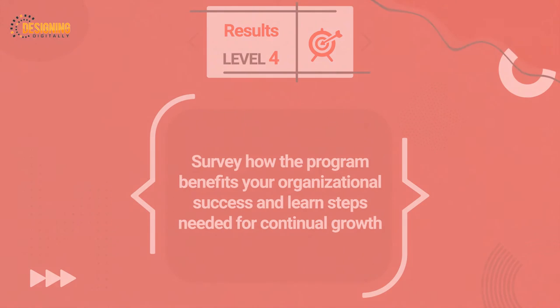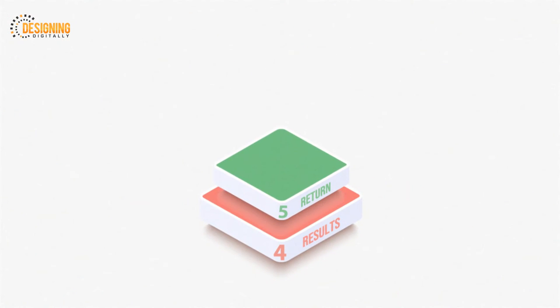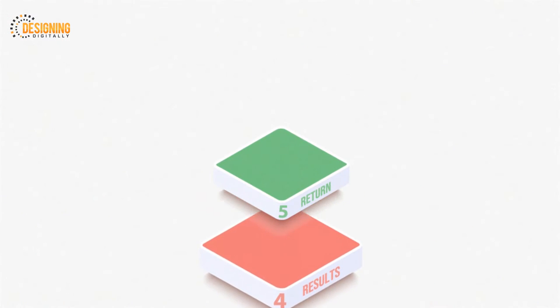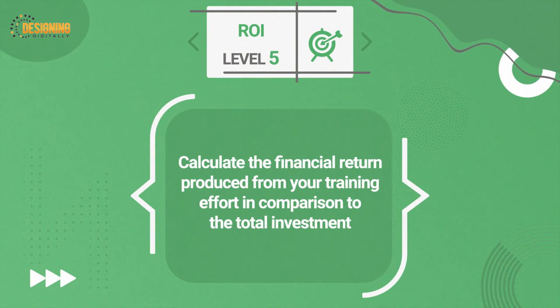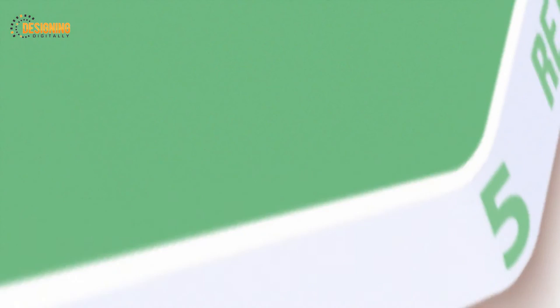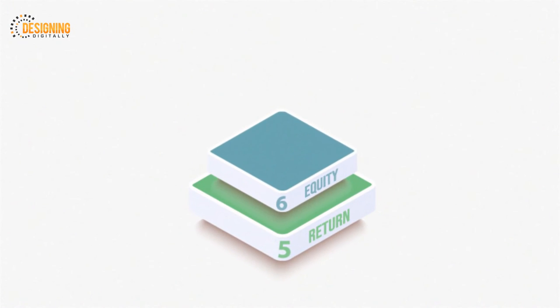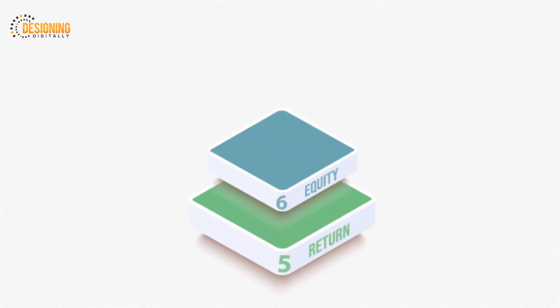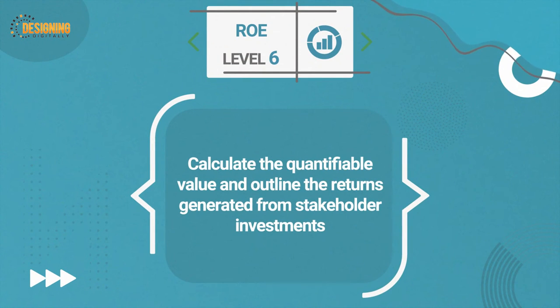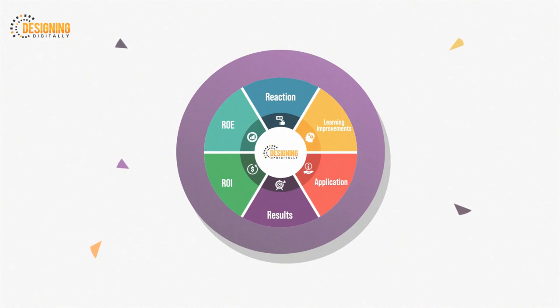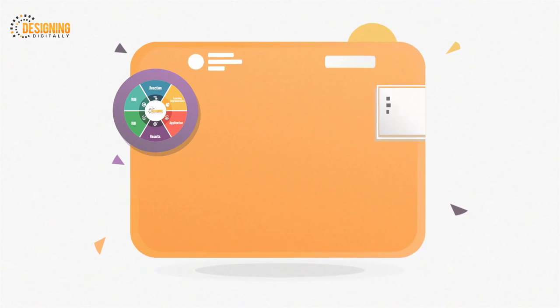Level five: ROI, or return on investment. Calculate the quantifiable value and outline the returns generated from stakeholder investments. With the Designing Digitally training evaluation model, you know your employees are getting the training they need in order to consistently grow and evolve your company.